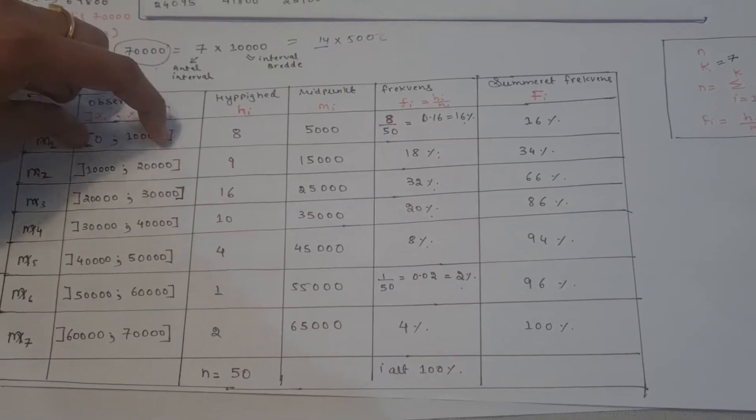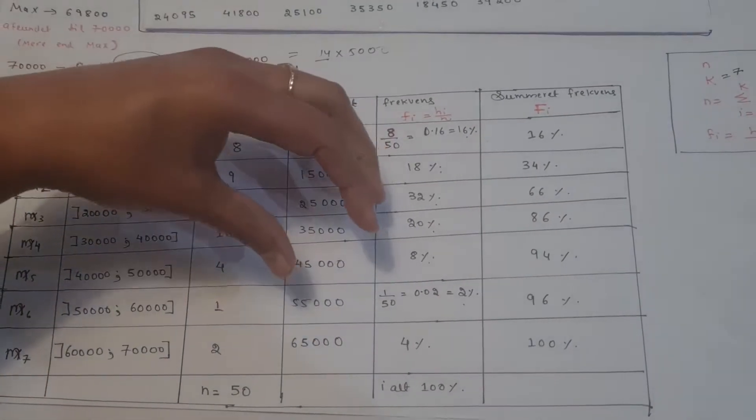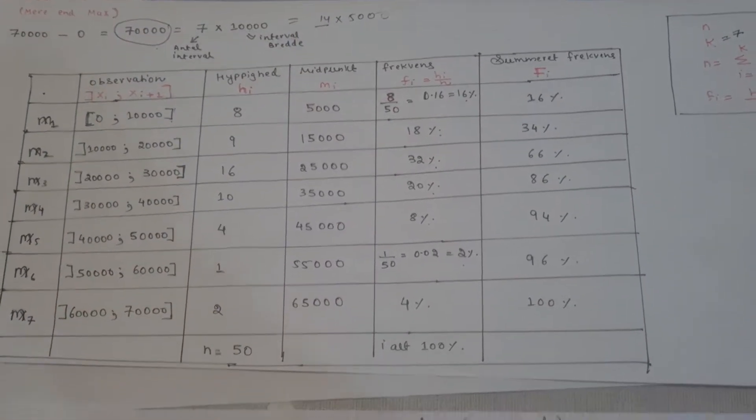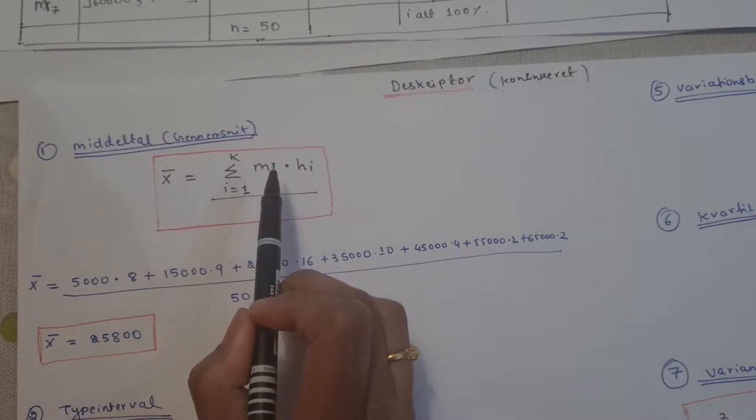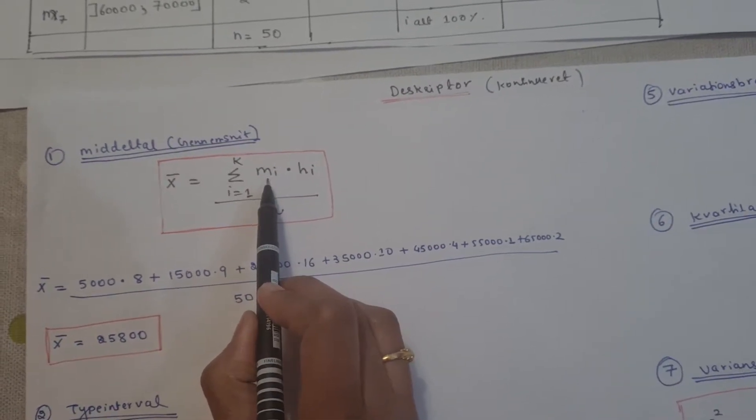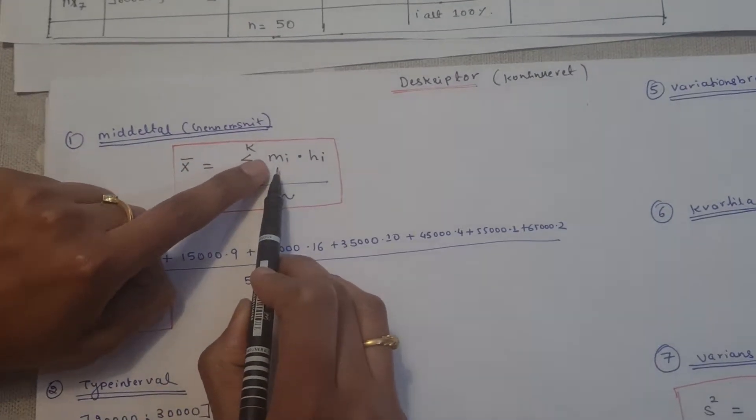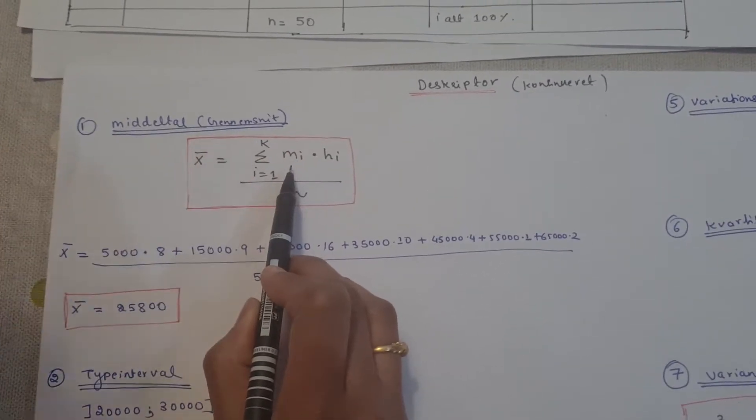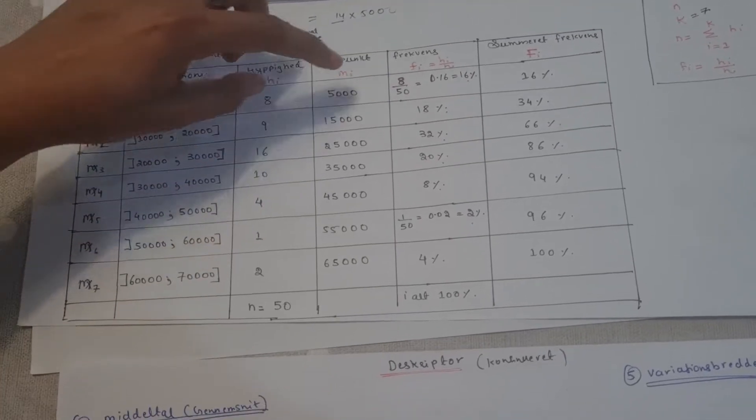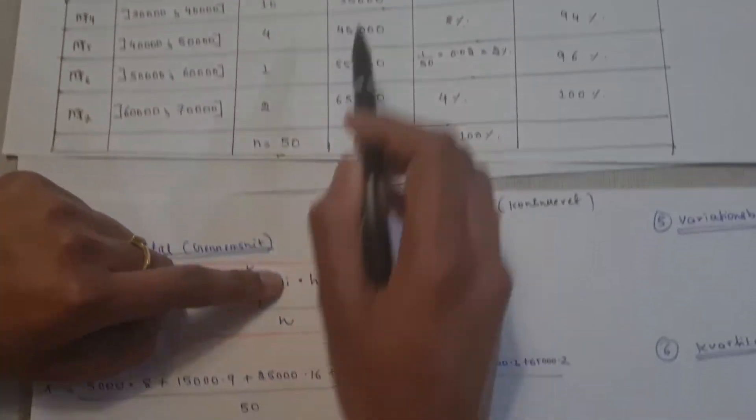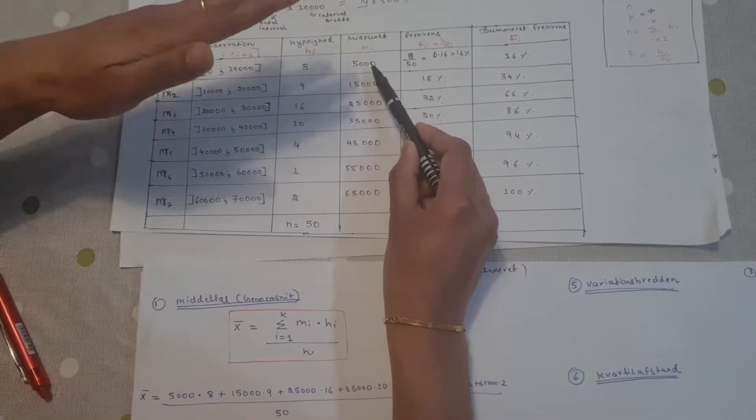For now we have the interval, we have the description. So in the description, we have X_i. So fully, we have the X_i. We have only the midpoint. So we have the X_i here for the interval. So you see, the midpoint is around 5,000.